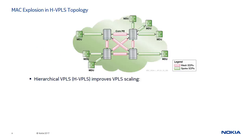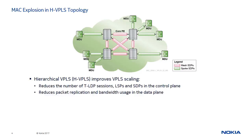Hierarchical VPLS or HVPLS solves many problems with VPLS scaling. It reduces the number of TLDP sessions, SDPs and LSPs in the control plane and reduces packet replication and bandwidth usage in the data plane. In addition, it reduces the number of required network touches and simplifies provisioning. However, HVPLS does not address the problem of managing very large numbers of MAC addresses learned in a very large VPLS.